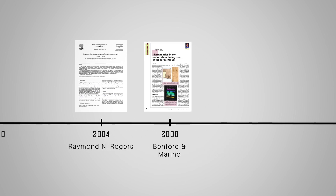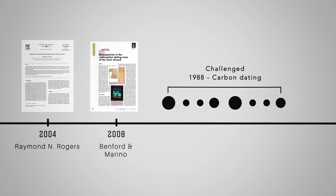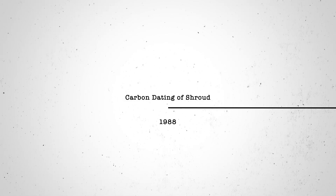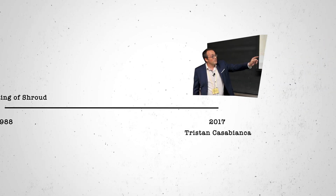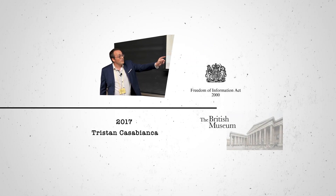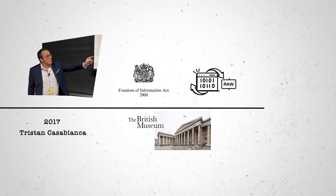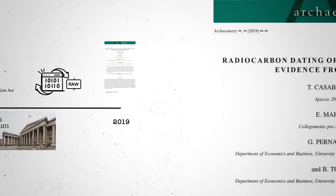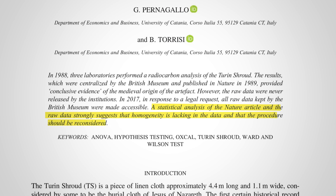Benford and Marino's paper was also published in Chemistry Today, and half a dozen scientific journals were published challenging the 1988 radiocarbon dating. For nearly 29 years following that dating, the raw data had not been made public. However, in 2017, an Italian researcher named Tristein Casbianca utilized the Freedom of Information Act to compel the British Museum to release the data. As a result, the raw data was finally analyzed, and findings were published in the Archaeometry Journal in 2019. The analysis strongly suggests there are statistical problems with the raw data of the carbon dating and that it lacks the homogeneity needed to accurately determine the age of the Shroud.